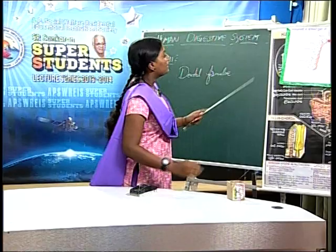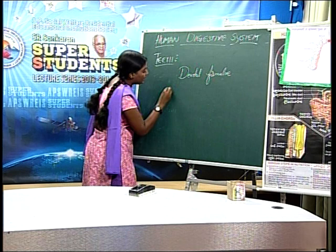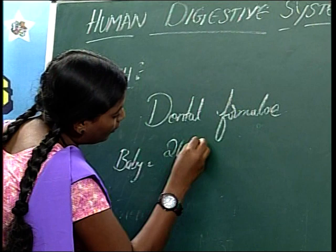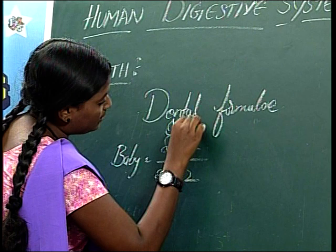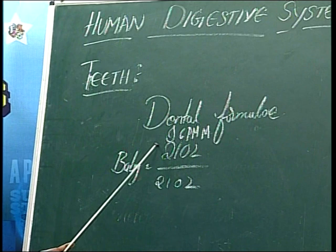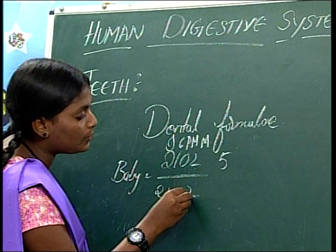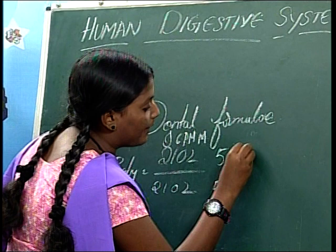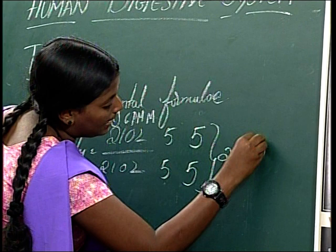The dental formula of baby is 2102/2102, meaning 2 incisors, 1 canine, 0 premolars and 2 molars in each half of the jaw. Upper side: 2+1+2 = 5; lower side: 2+1+2 = 5. Each side has 5 upper and 5 lower teeth, giving a total of 20 teeth. This is known as milk dentition.